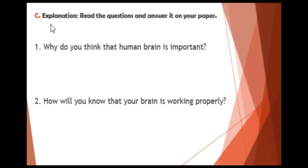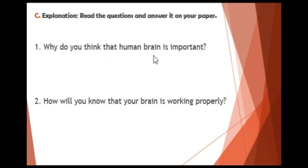For Activity C, this is an explanation activity. Read the questions and answer them on your paper. Number one: Why do you think the human brain is important? Number two: How will you know that your brain is working properly?